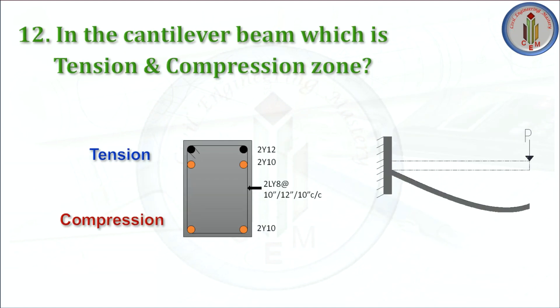Next: in a cantilever beam, which zone is tension and which is compression? When a load is applied on the cantilever beam, the top will be in tension and the bottom will be in compression. Whereas in normal beams, the top is in compression and the bottom is in tension.